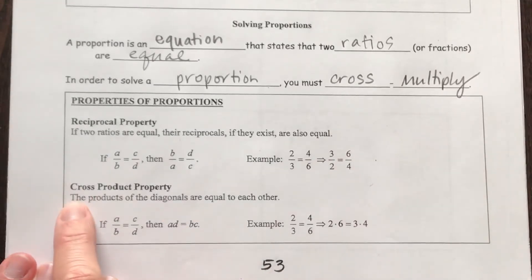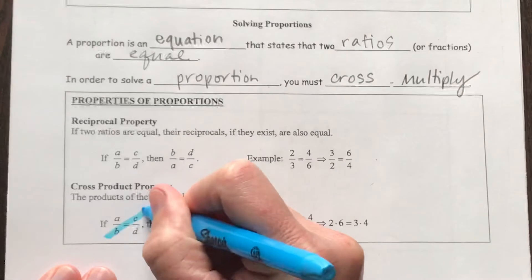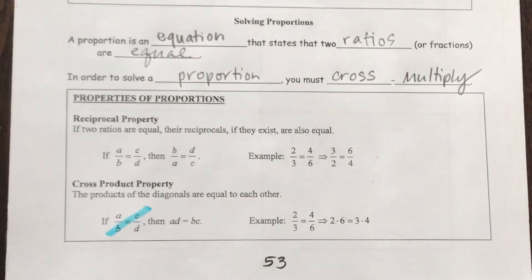Now here it says the cross product property. The product of the diagonals, products means multiplication. So the multiplication of the diagonals are equal to each other. And this is how we are going to solve our proportions, and that's going to be by cross multiplying.